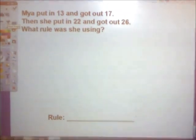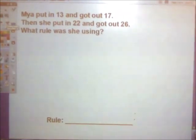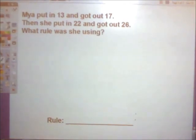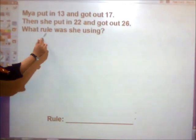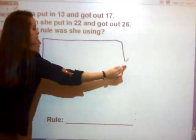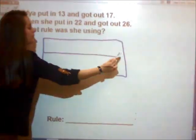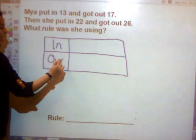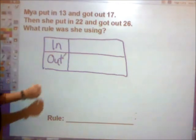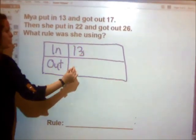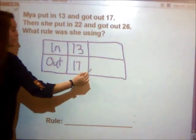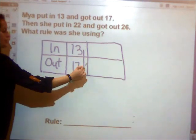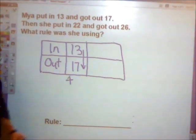Sometimes we can have word problems for our input-output table. Let's try this one. Maya put in 13 and got out 17. Then she put in 22 and got out 26. What rule was she using? First, I'm going to draw my input-output table. I know I need to put a number in in order to get a number out. The first number Maya put in was 13. She got out 17. 13 to 17, my number is getting bigger. I must be adding.